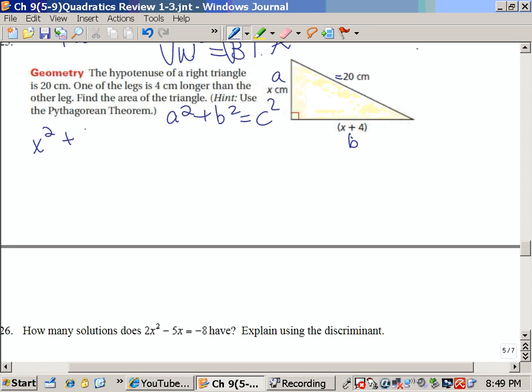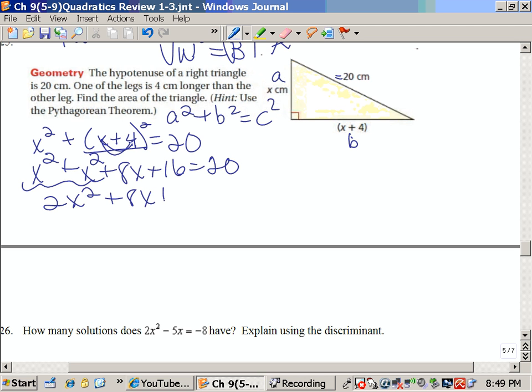So I've got x squared plus x plus 4 squared equals 20 squared. x squared, now remember when I square a binomial, I get x squared, I double the middle which is 8x, and 4 squared is 16, and that equals 20. x squared and x squared is 2x squared plus 8x plus 16 equals 20.